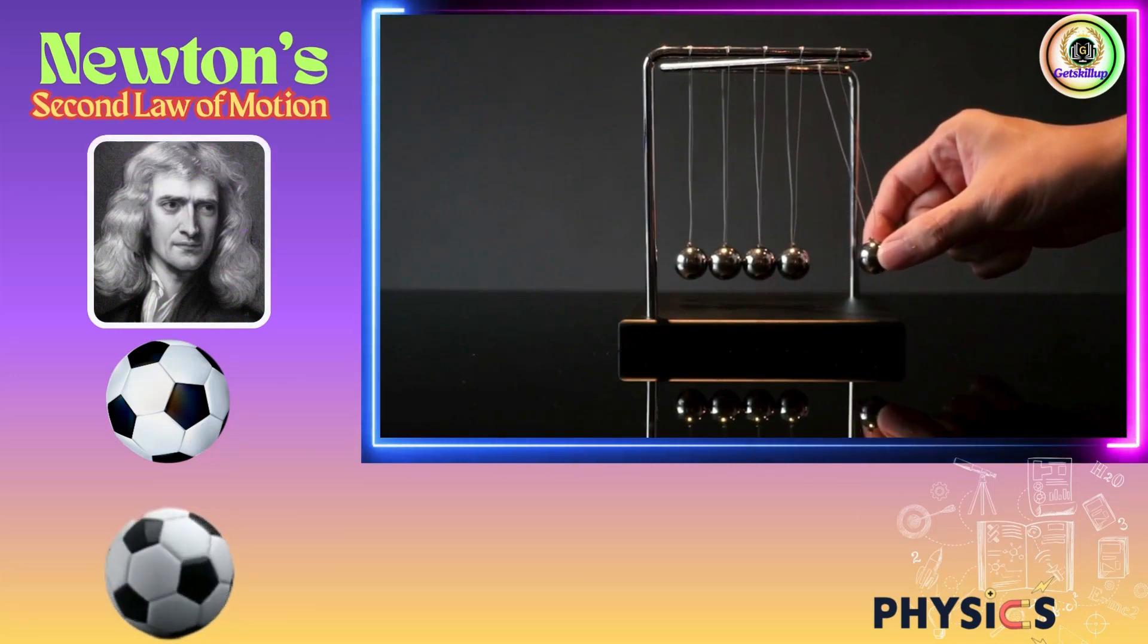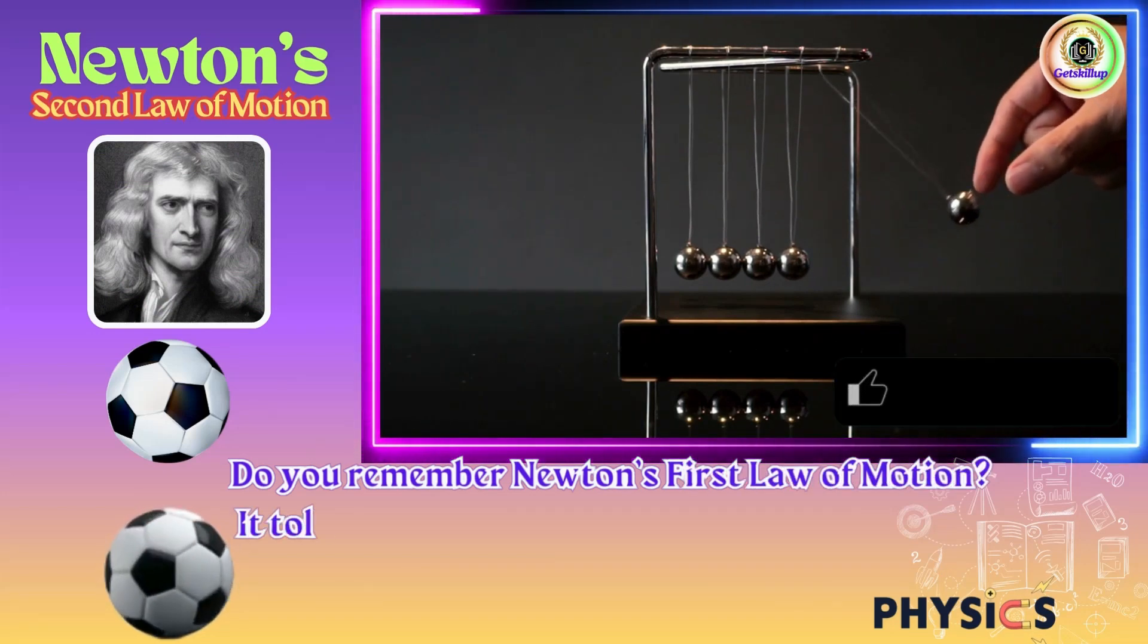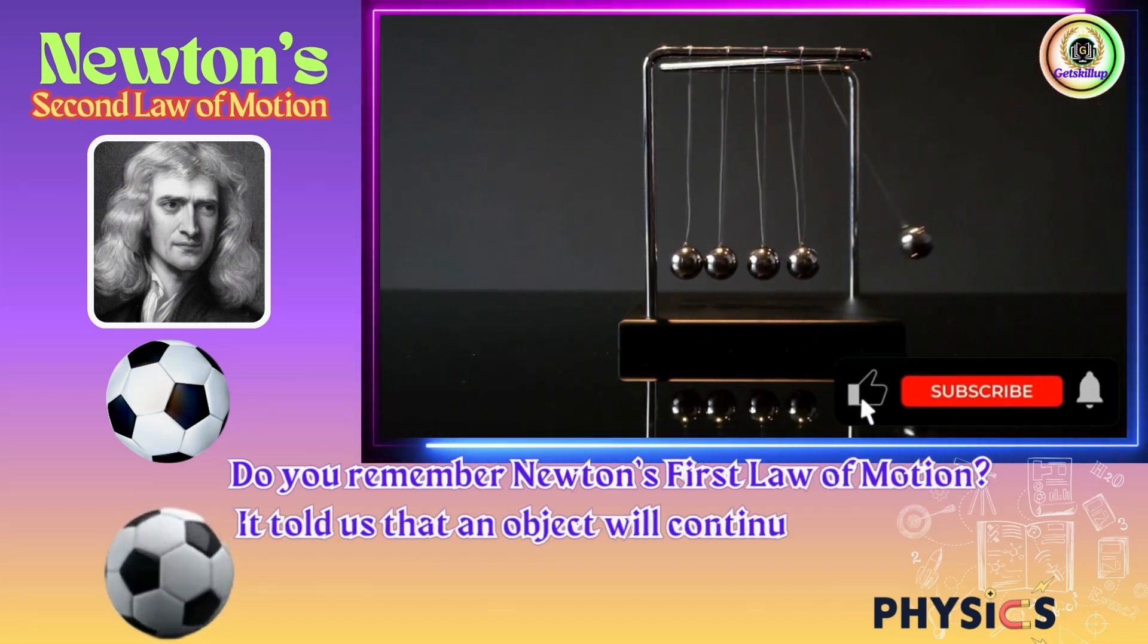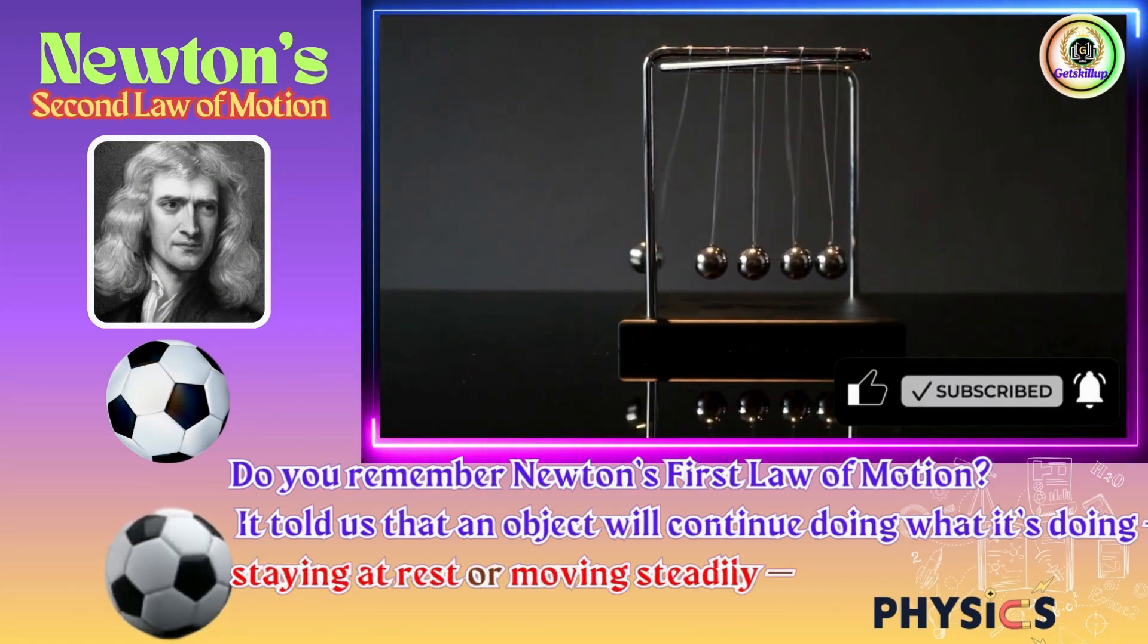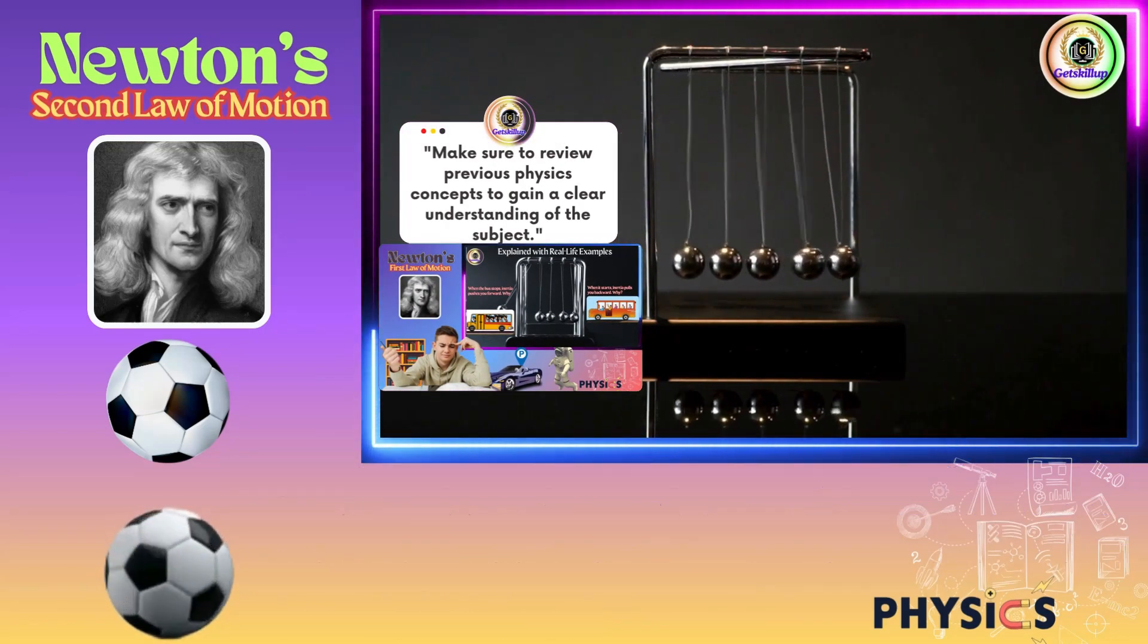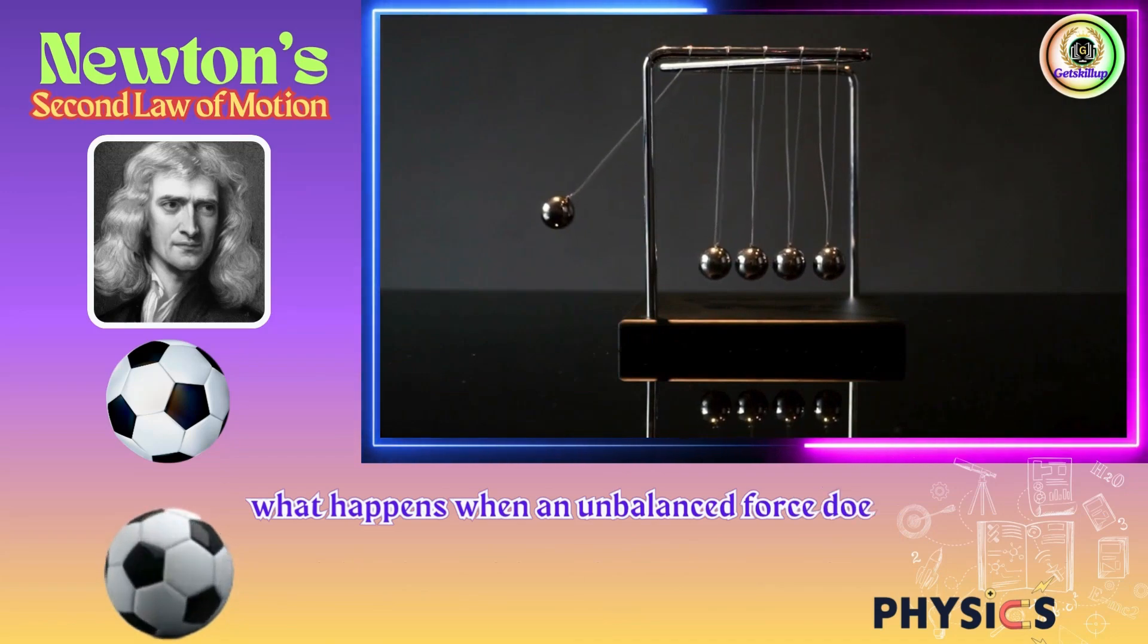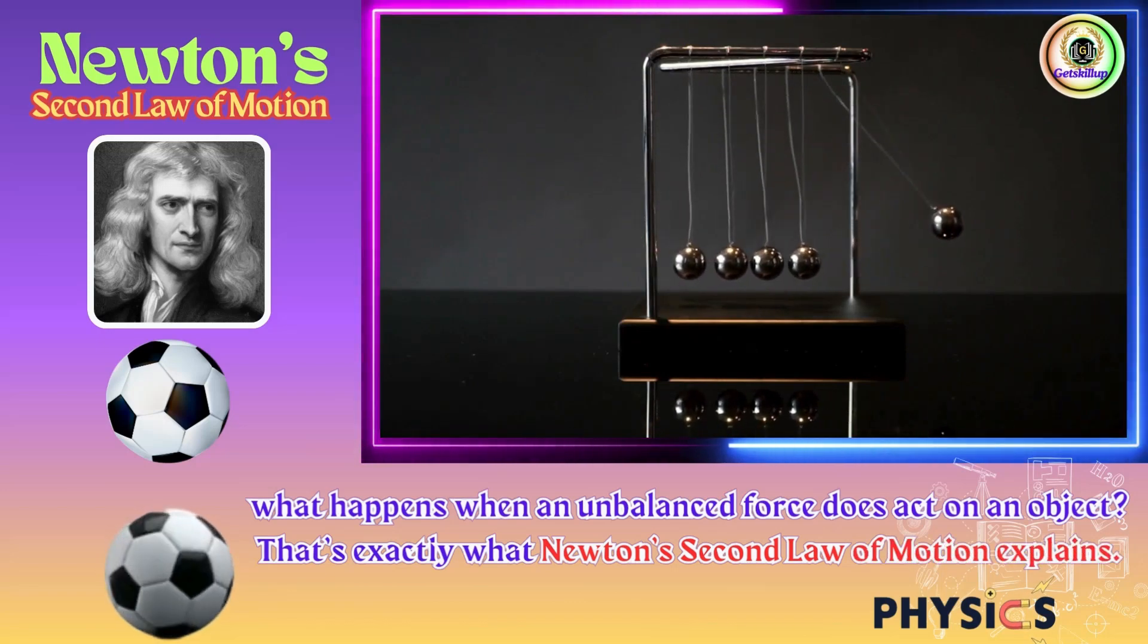Newton's second law of motion, explained with examples. Do you remember Newton's first law of motion? It told us that an object will continue doing what it's doing, staying at rest or moving steadily, unless an unbalanced external force acts on it. But what happens when an unbalanced force does act on an object? That's exactly what Newton's second law of motion explains.